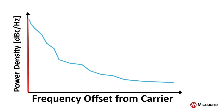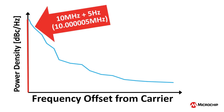But the basic concept I displayed graphically still applies, even when the measured phase power is from a 10.0000005 megahertz clock edge. We combine all of the phase power components at 10.0000005 megahertz, which is the same as saying we combine all of the phase power components that are at a 5 hertz offset from the carrier. And these are the values that are graphed in the phase noise plot.